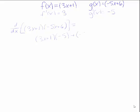Plus the second function, minus 5x plus 6, times the derivative of the first, which is 3. And if I wanted to simplify that, I could. I can say that's minus 15x minus 5 minus 15x plus 18, which is minus 30x plus 13.